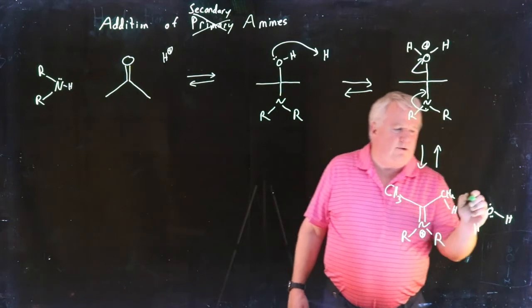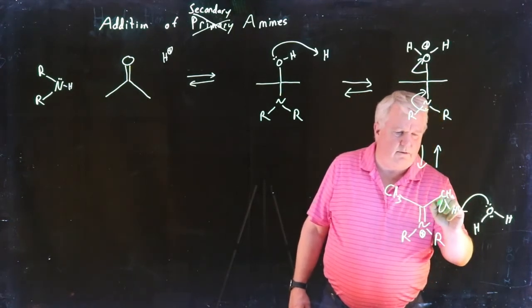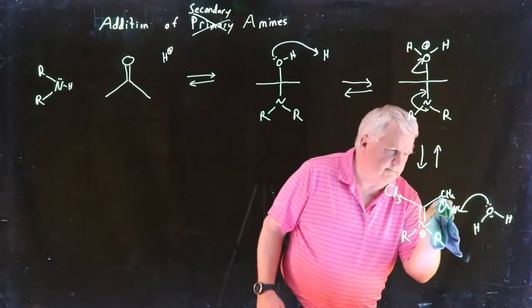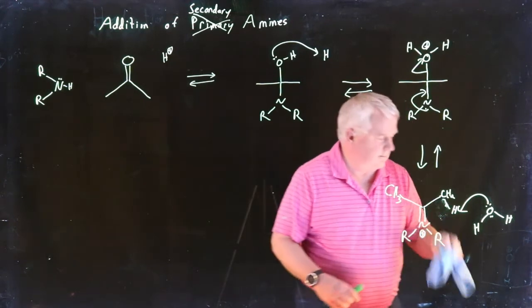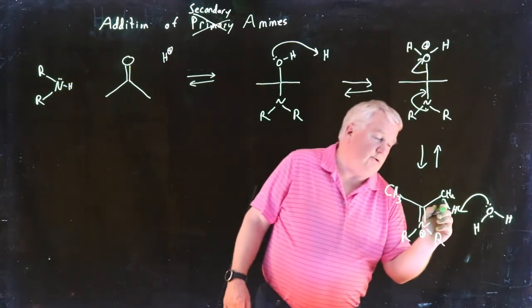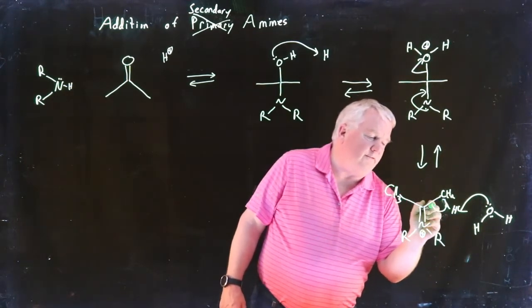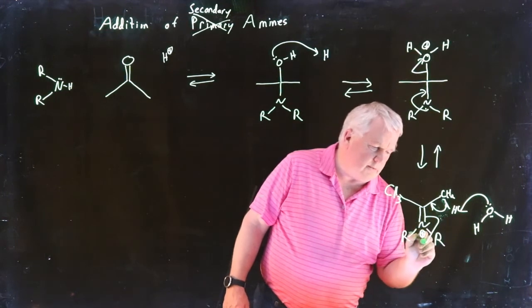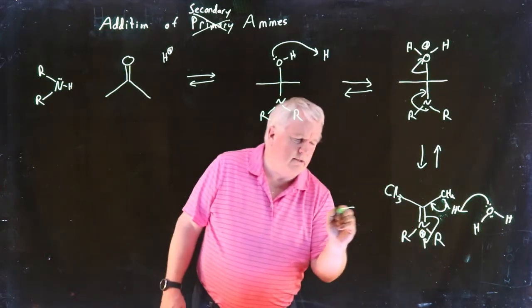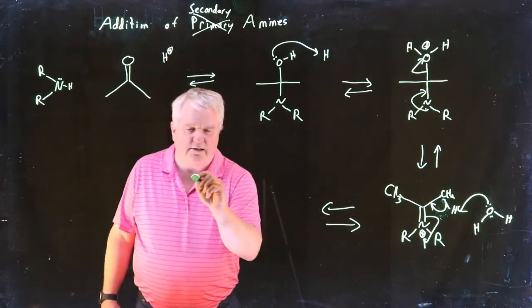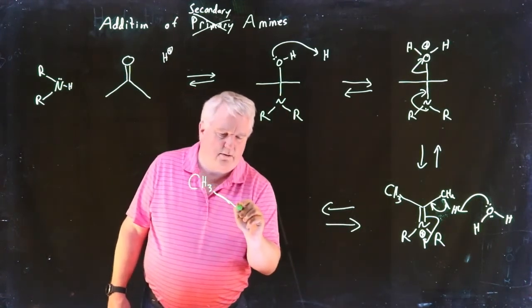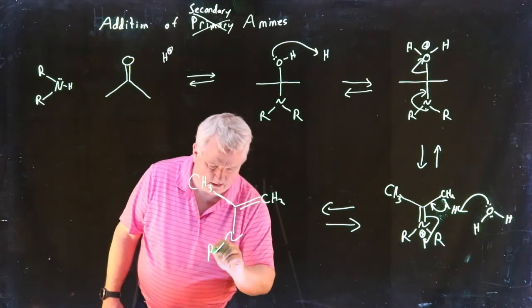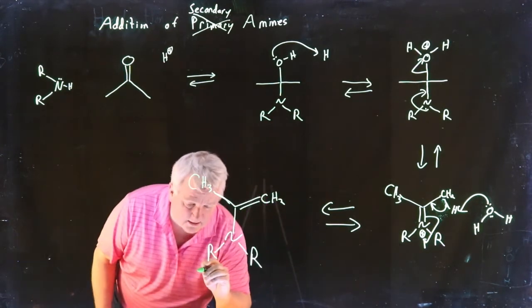We're just going to pull that proton off. Oops, that was a bad mistake actually—we could have proceeded but we don't need to. The electrons in the carbon-hydrogen bond are going to form a carbon-carbon double bond, and when we do that we have to get rid of the carbon-nitrogen double bond. The electrons are going to come up onto the nitrogen, and we form this species. We call this thing an enamine.